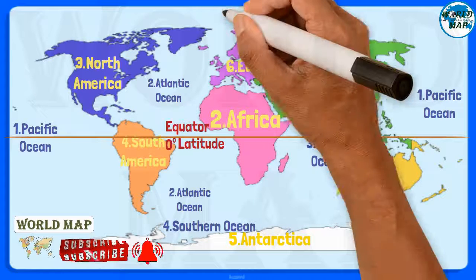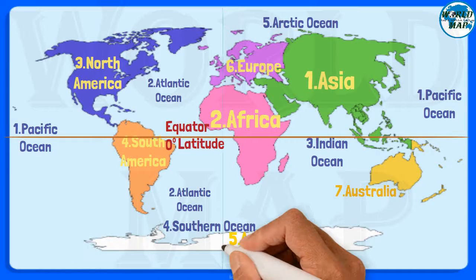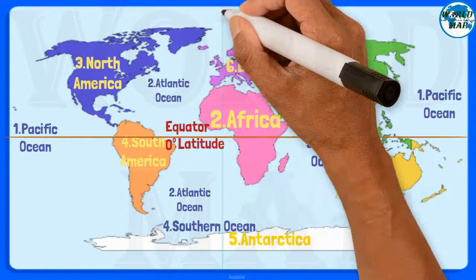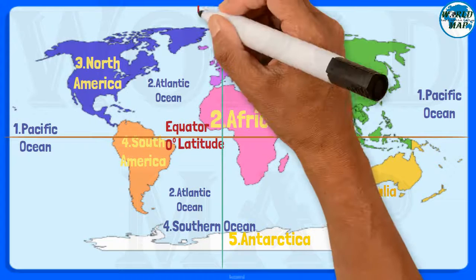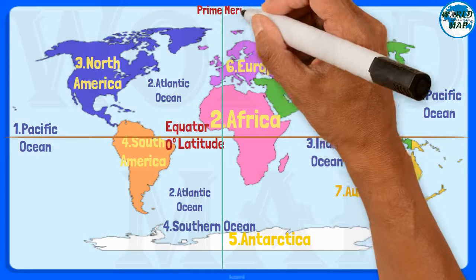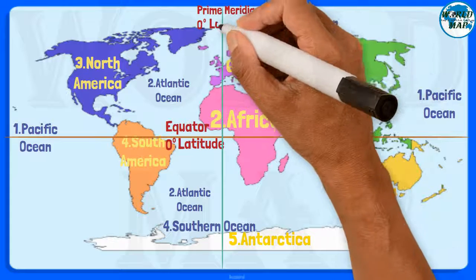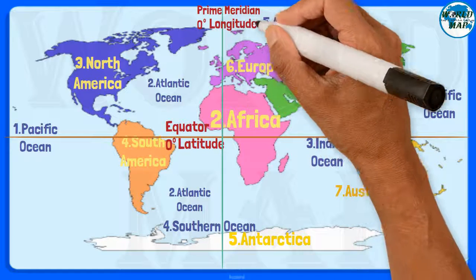Prime Meridian. The prime meridian is the line of zero degrees longitude, the starting point for measuring distance both east and west around Earth.